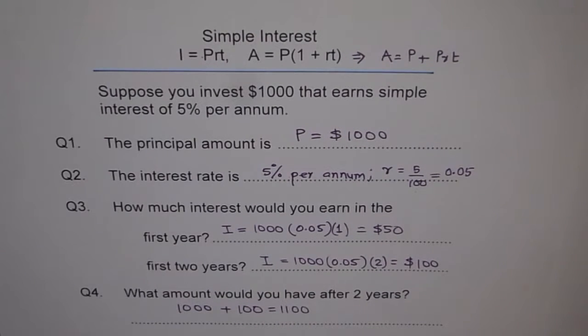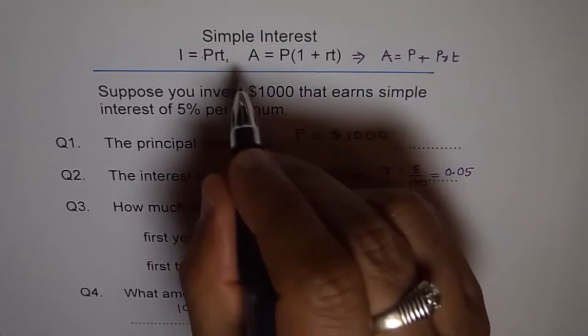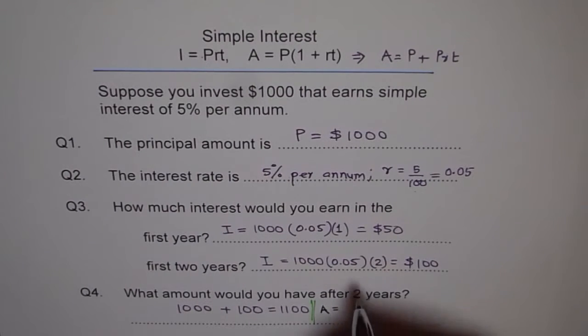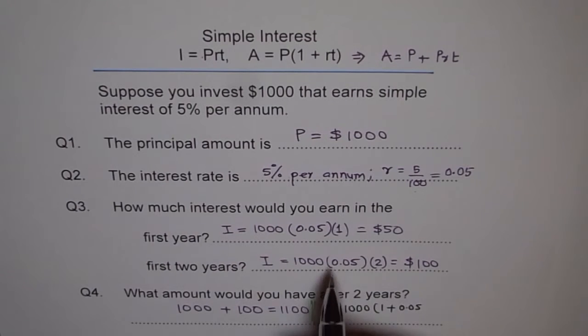So this is one way of doing it. And the other way is to use this formula straight. So let me use the formula for you and write down the answer here. So after two years, we will use the formula. We will write A equals to principal is $1000. 1000 times 1 plus R is 0.05, 0.05. And time is 2. So we will multiply this by 2.